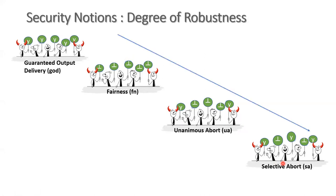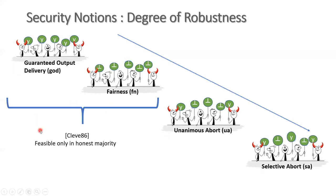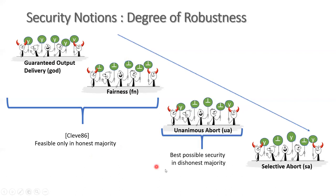These notions are listed from strongest to weakest, so the implications follow accordingly: guaranteed output delivery implies fairness, which implies unanimous abort, which in turn implies selective abort. Naturally, it is desirable to get the strongest security notions, but that may not always be feasible. In fact, there is a famous feasibility result by Cleve which shows that GOD and fairness are possible only in the honest majority setting, where the adversary corrupts less than half of the total population. This means that in the dishonest majority setting, the best security notion one can hope for is just unanimous abort.